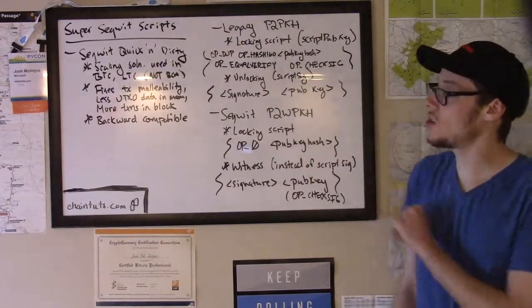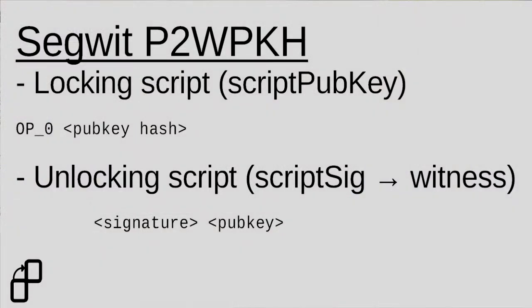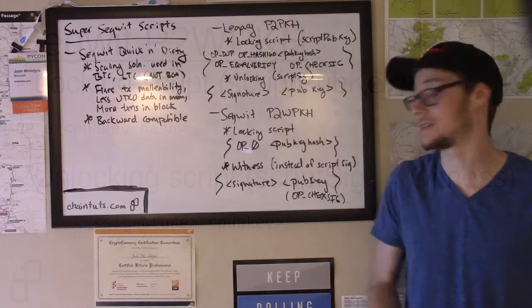There's still a locking condition set on the UTXO sent to the SegWit compatible address. However, instead of this large piece of data here, you simply have an operator that specifies the SegWit version and the public key hash, which is similar to a legacy transaction.